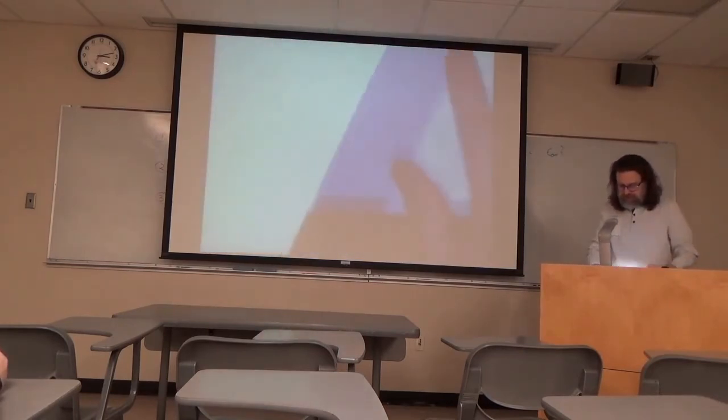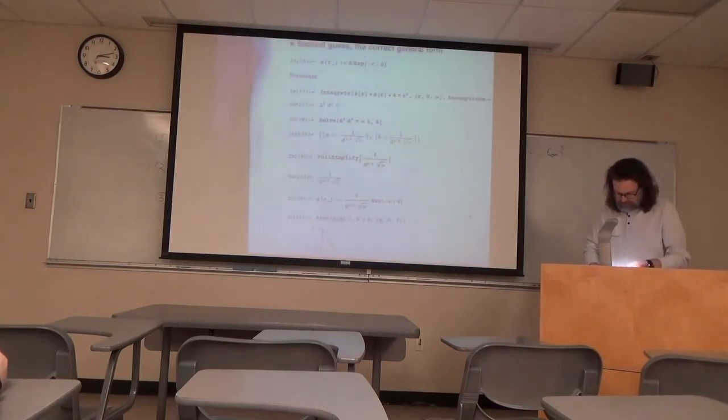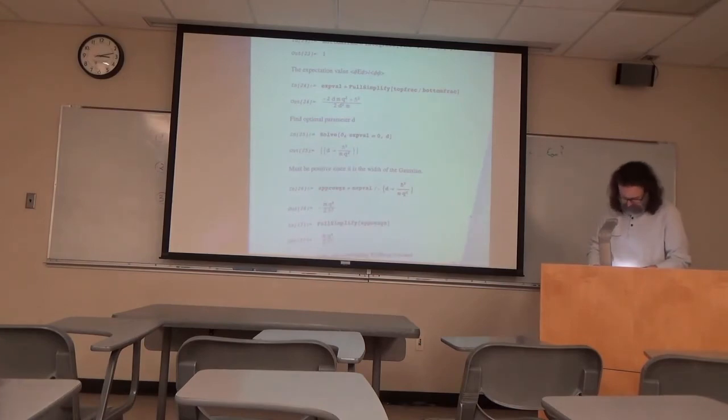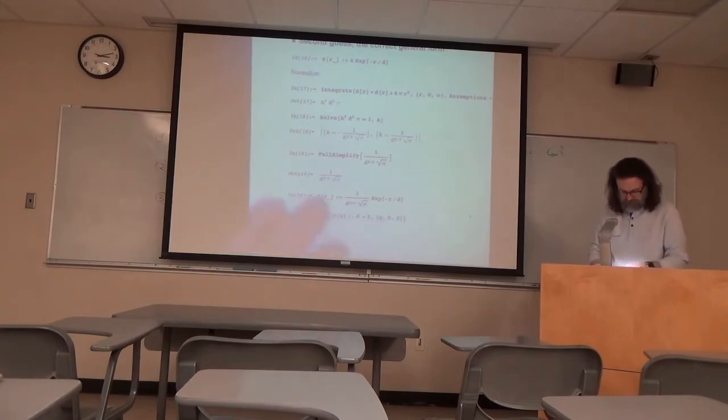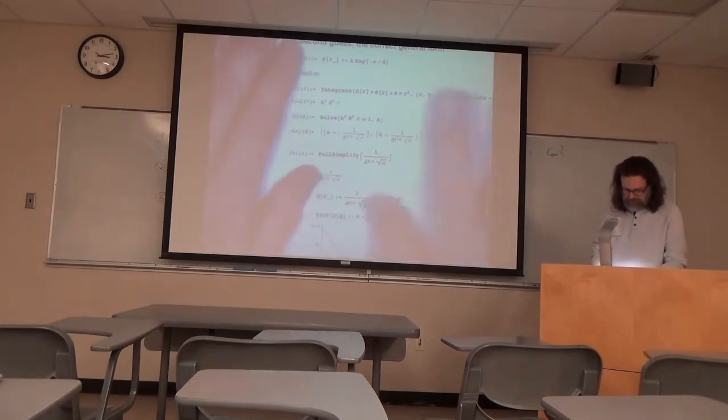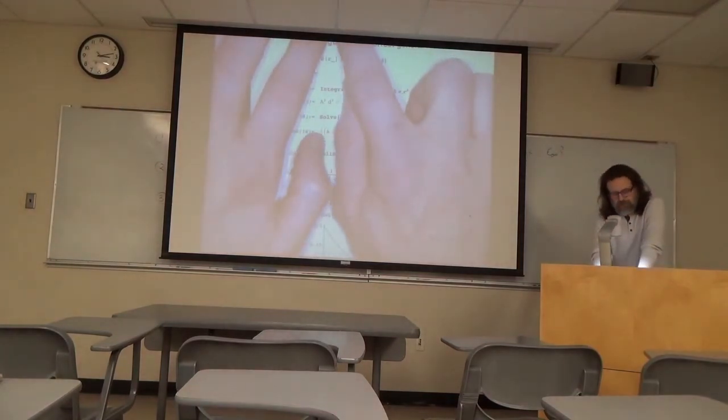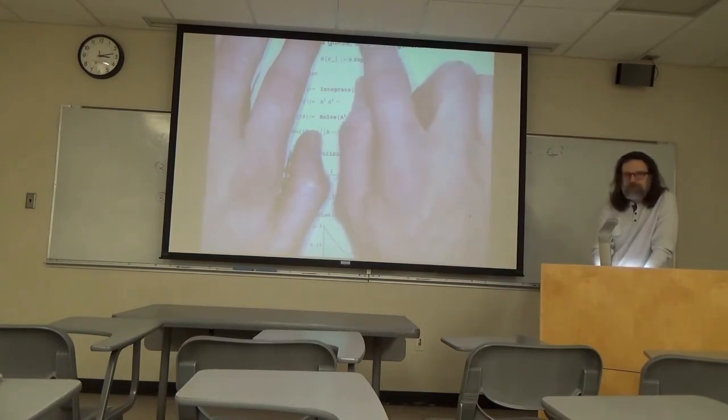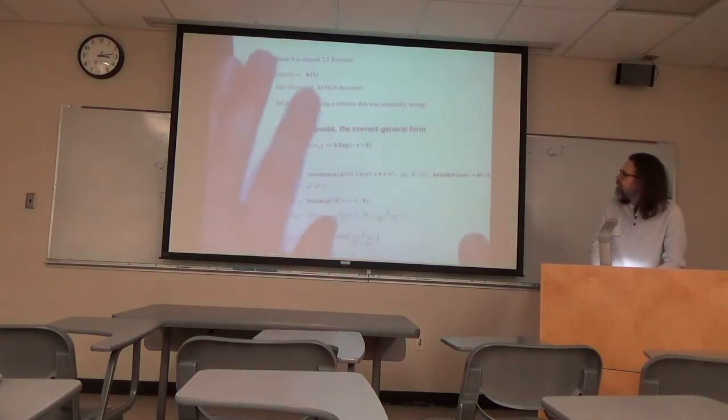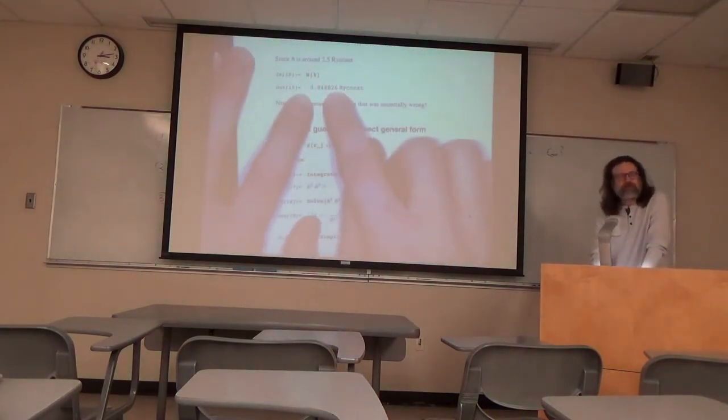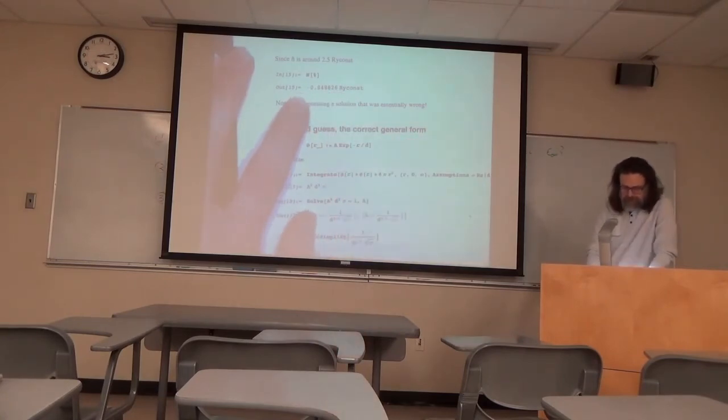Now if I collect these terms and substitute the Rydberg constant in, I get a ground state energy of eight thirds Rydberg constant divided by pi minus. Now in contrast, we know what the exact energy is. It's one Rydberg. So we should get minus one Rydberg and we actually got 0.8. So we're accurate to about 15% of what the true should be. Which isn't... We're accurate to about 15% of what it should be. So with a bad guess, it's still pretty accurate.